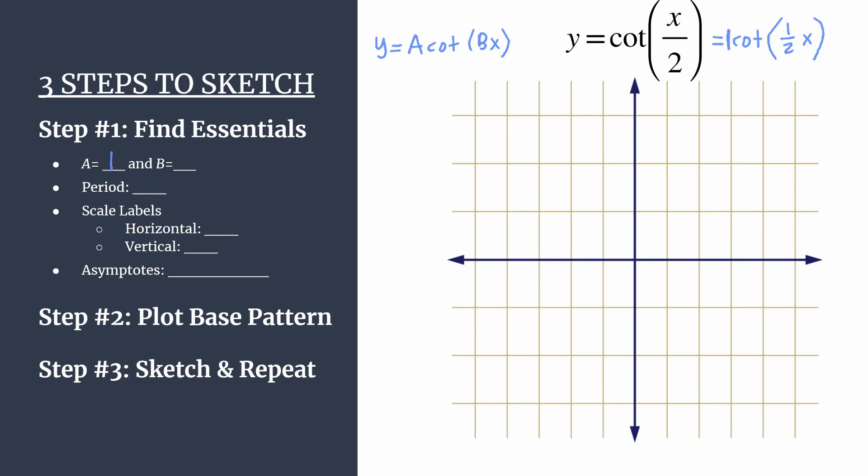We can see b is the coefficient of x. And we worked hard when we rewrote it to pull out that value, 1 half. So that tells us a couple things. First, it's nice to know that b tells you how many cycles of your graph happen between 0 and pi. So we should only see half a cycle happening in that space.